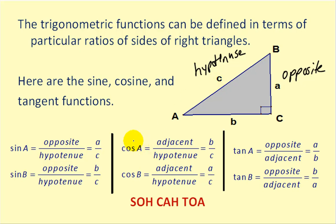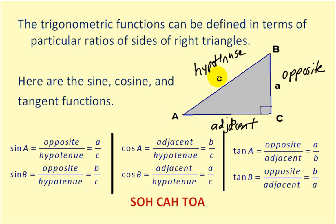Sticking with angle A, the cosine of angle A would be the ratio of the adjacent side over the hypotenuse. If this is the opposite side from angle A, this would be the adjacent side, because this is always the hypotenuse. So the cosine of A would be the ratio of the adjacent side over the hypotenuse, or B over C.